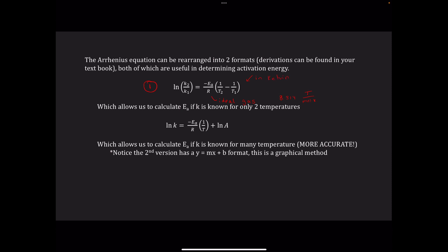This first equation allows us to calculate activation energy if K is known for only two temperatures. Our second format says the natural log of K equals negative Ea over R times 1 over T, plus the natural log of A. This format allows us to calculate activation energy if K is known for many temperatures — and anytime we have more data points, we get a more accurate picture.